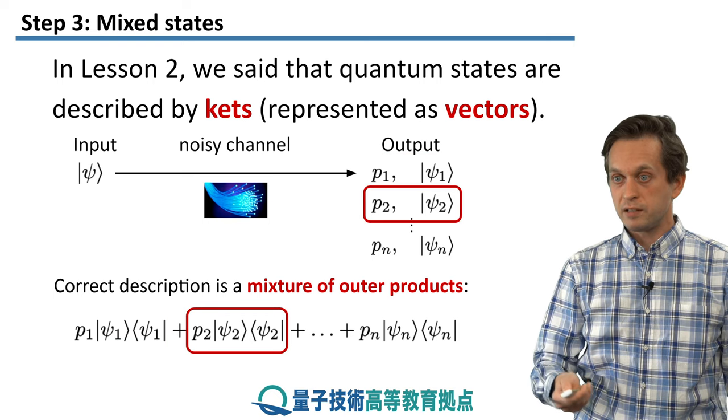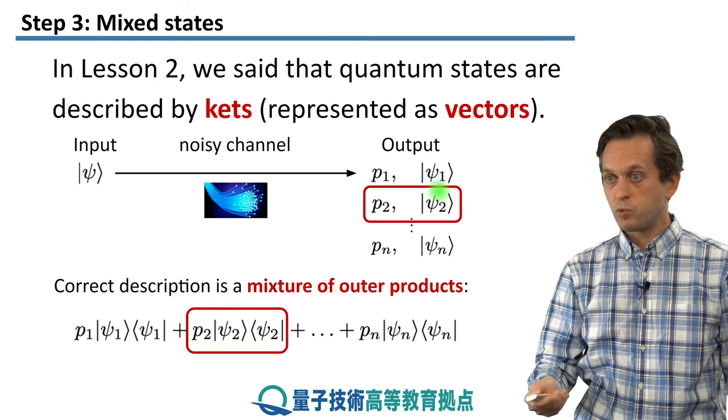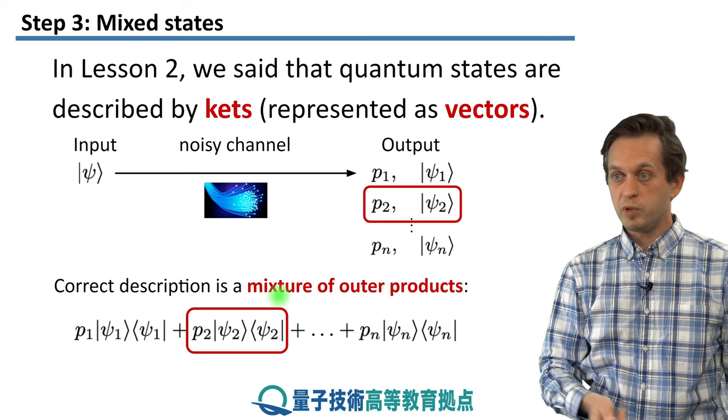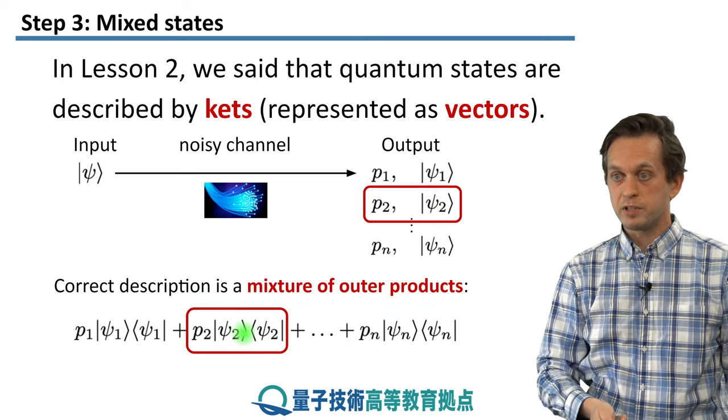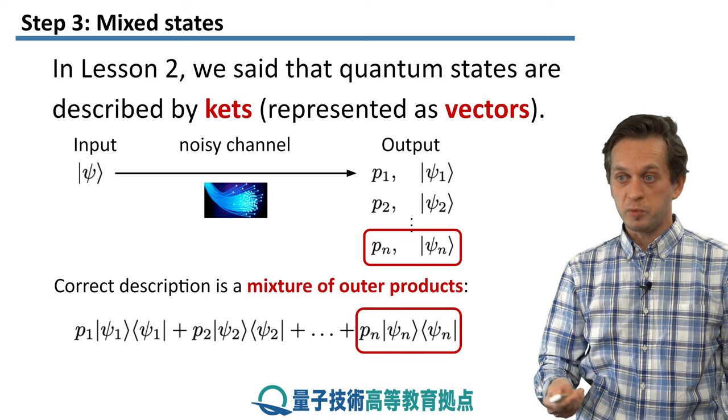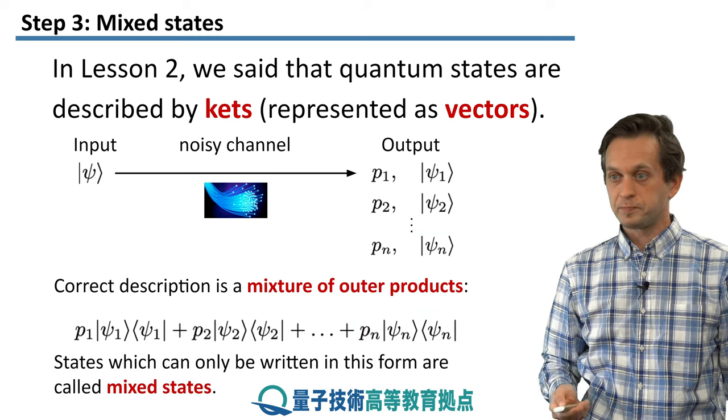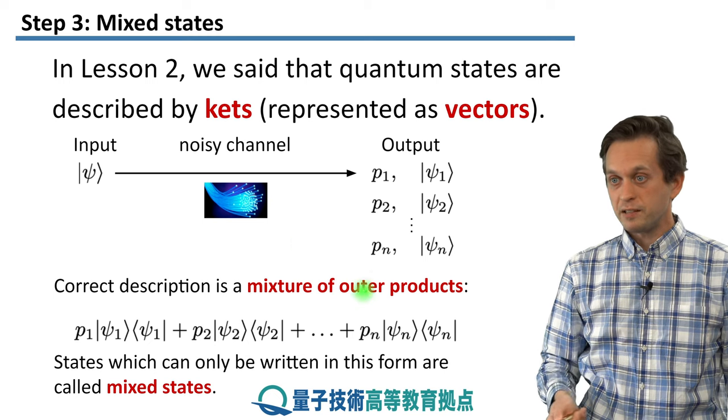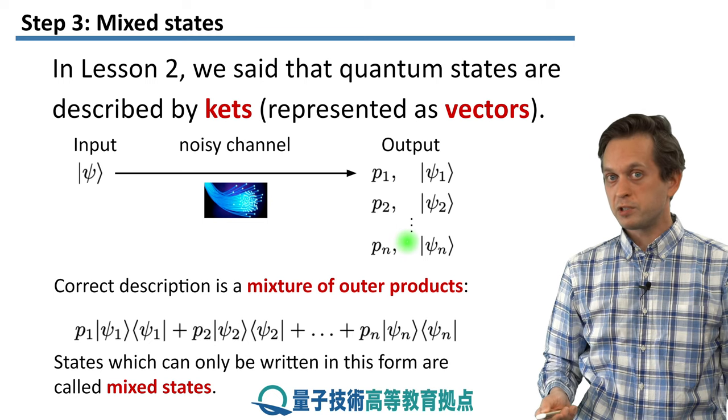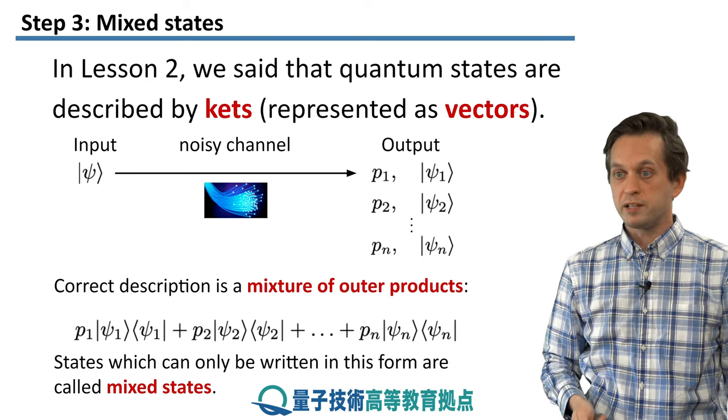But if you remember, this outer product now can also be interpreted as the projection operator onto that state, which is the reason why this actually works. So we went from a description of pure states through vectors to a description of noisy mixed states where we need a description through matrices. Each term corresponds to one of these scenarios. With probability P2 we are projecting onto the state psi 2. With probability Pn we are projecting onto the state psi n. Such a state, which cannot be written as a superposition of kets, is called a mixed state.